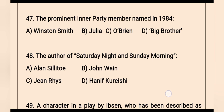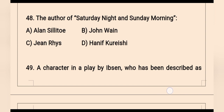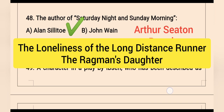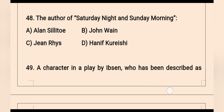Question 48: The author of Saturday Night and Sunday Morning — the right option is Alan Sillitoe. Saturday Night and Sunday Morning is the first novel by British author Alan Sillitoe, who was one of the Angry Young Men of the 1950s. The main characters are Arthur Seaton, Brenda, etc. His other works include The Loneliness of the Long Distance Runner and The Ragman's Daughter.